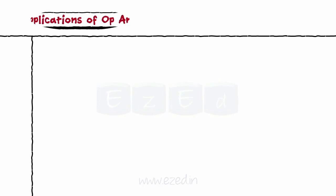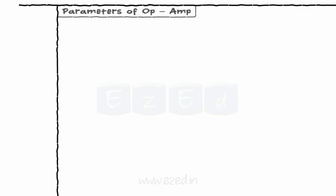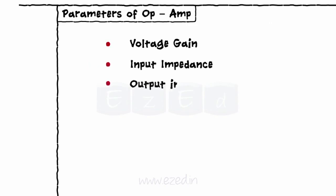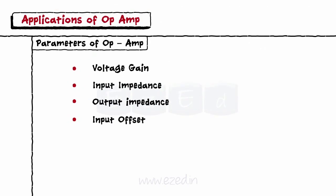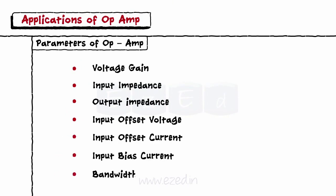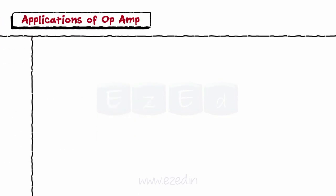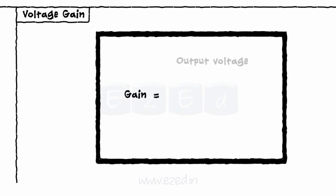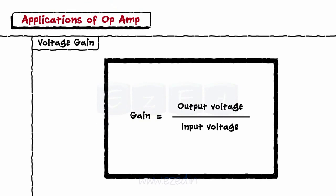Moving forward, we learn different parameters of op-amp: voltage gain, input impedance, output impedance, input offset voltage, input offset current, input bias current, and bandwidth. Voltage gain is defined as the ratio of output voltage to input voltage.